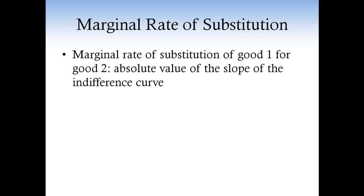Let me start with the definition. The marginal rate of substitution of good one for good two is the absolute value of the slope of the indifference curve.